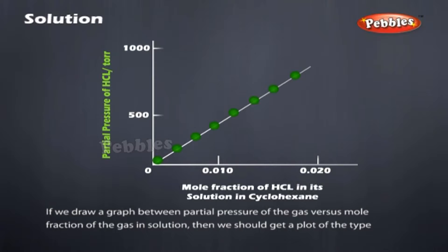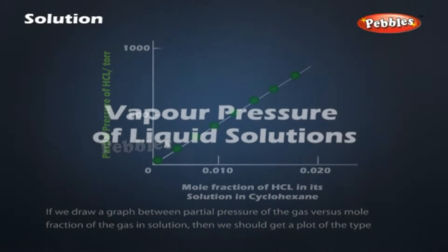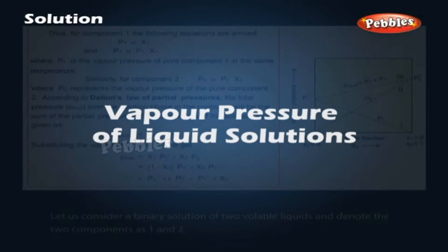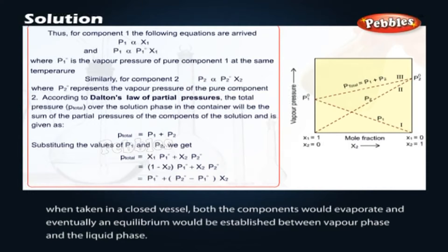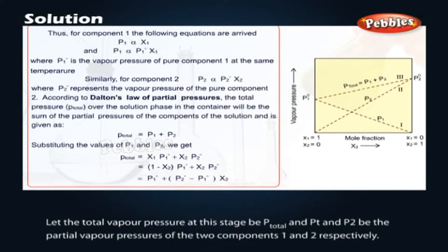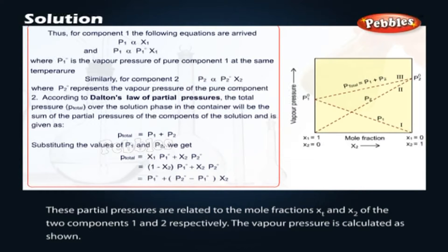If we draw a graph between partial pressure of the gas versus mole fraction of the gas in solution, we get a plot of the type shown for vapor pressure of liquid solutions. Consider a binary solution of two volatile liquids and denote the two components as 1 and 2. When taken in a closed vessel, both components would evaporate and eventually an equilibrium would be established between the vapor phase and the liquid phase. Let the total vapor pressure at this stage be P_total, and P1 and P2 be the partial vapor pressures of the two components 1 and 2, respectively. These partial pressures are related to the mole fractions X1 and X2 of the two components. The vapor pressure is calculated as shown.